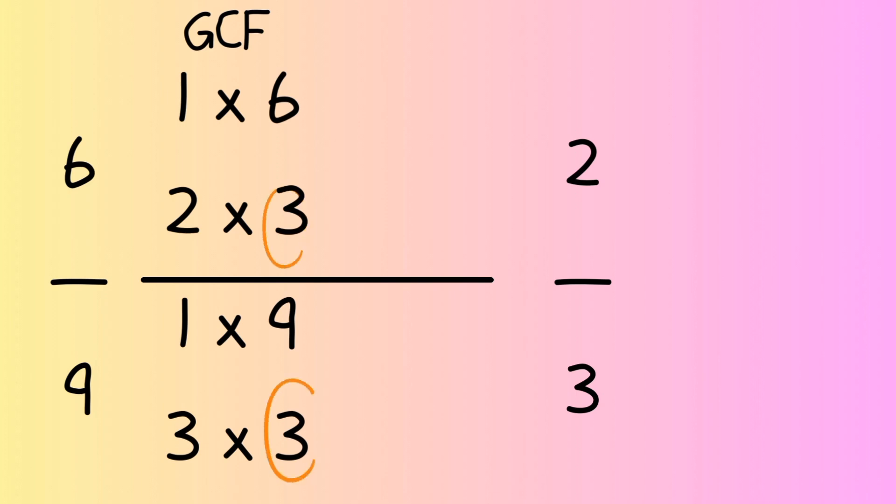Same thing on the bottom, the 9. What will divide into 9? Will 1 go into 9? Yes, times itself. 1 times 9. What about 2? No, a 2 will not go into 9 equally. What about a 3? Yes, 3 times 3 is 9.